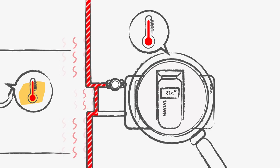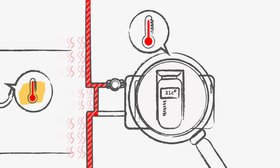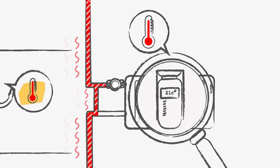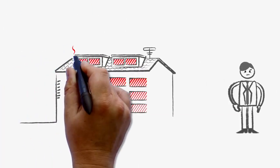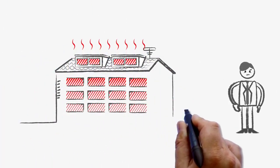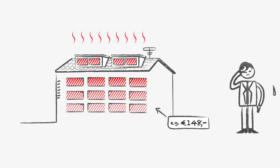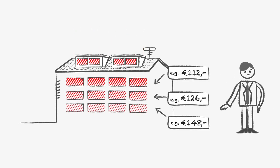This consumption of heat is not detected by the heat allocators that are placed onto the radiator, leaving you with a building that is overheated, uses huge amounts of precious energy, and causes headaches when it comes to fairly distributing costs amongst the residents.